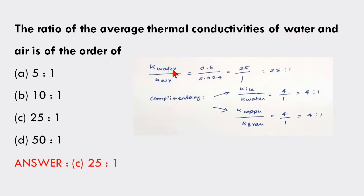The water thermal conductivity is 0.6, air is 0.024, and the ratio works out to 25:1.